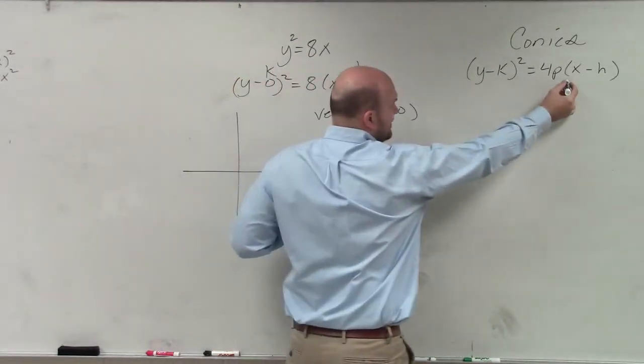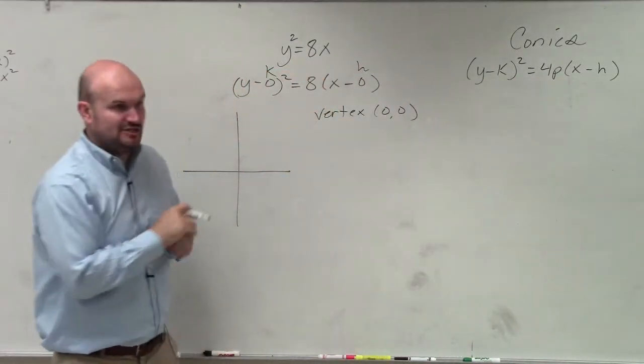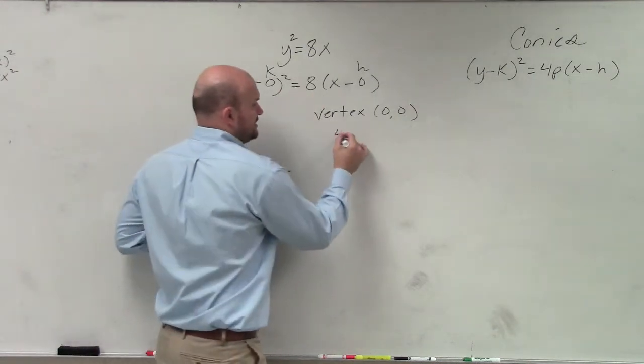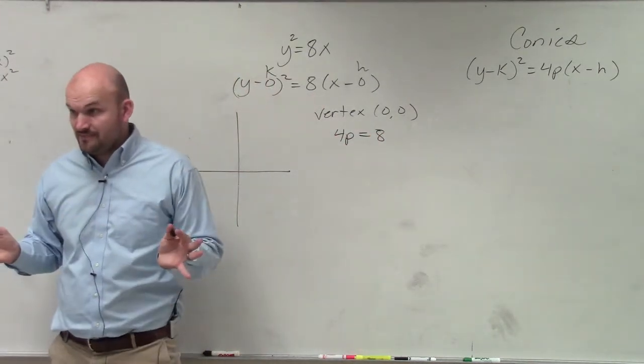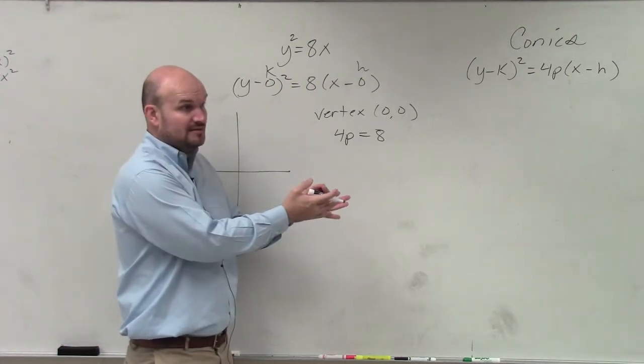So 4p is being multiplied by my x minus h. So therefore, you guys agree with me? 4p is equal to 8. Would everybody agree with me on that? So can I find the value of p?